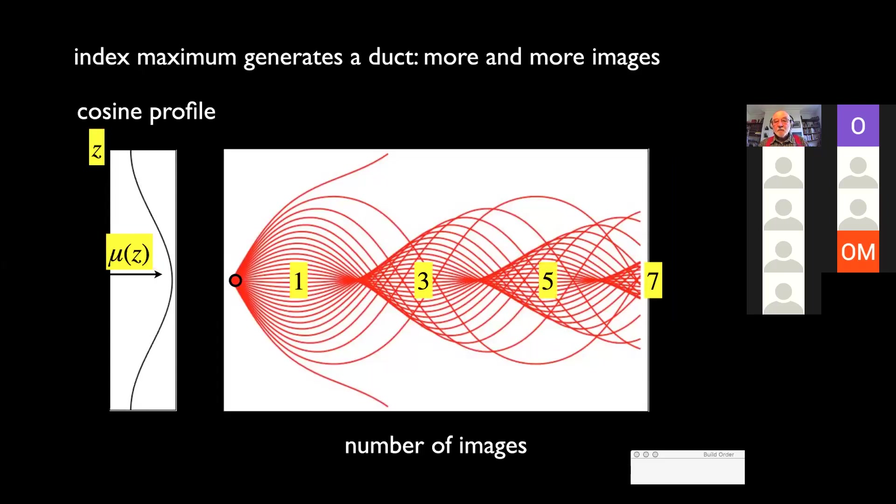So, you can show that the refractive index profile of this type generates rays of this kind, and you can have one image, three images, five images, seven images. I just want to make a comment. Raman and Pancharatnam don't show this picture, but Raman was aware of it because quite different work, which he'd done in the 1930s and 40s, was on the diffraction of a beam of light by a beam of sound. And the variations, periodic variations of the sound correspond to a refractive index variation of the air, and you get precisely this pattern in the rays that propagate.